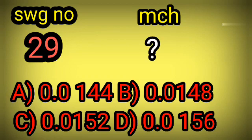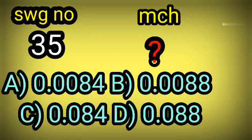Next, SWG number 29, MCH number — question mark. Choose the correct answer: option A 0.0144, option B 0.0148, option C 0.0152, option D 0.0156. Your correct answer: option B, 0.0148.